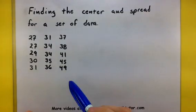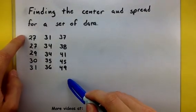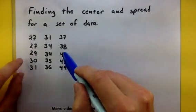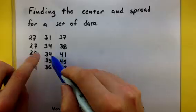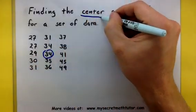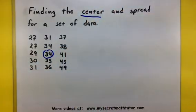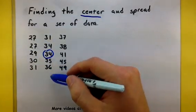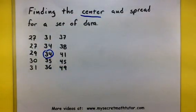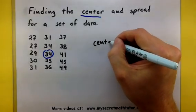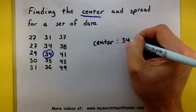So if we look at our data and we start from the bottom, the lowest number, and the top, the highest number, and work our way to the middle, sure enough, we reach a place in the center that's halfway. So approximately half of our data is less than 34, and approximately half of our data is greater than 34. So center: 34.